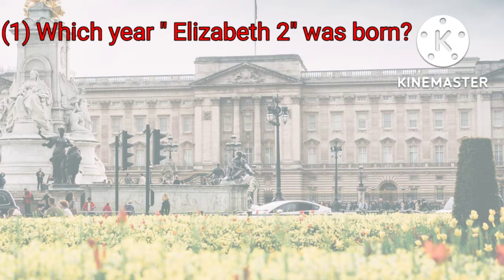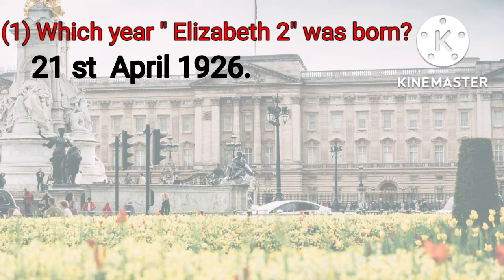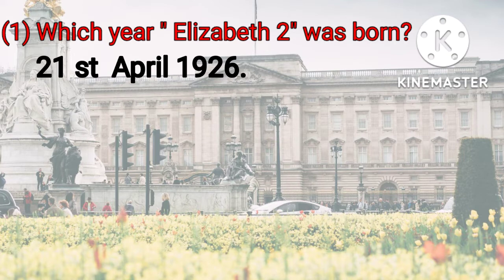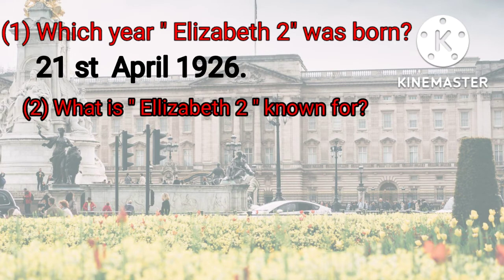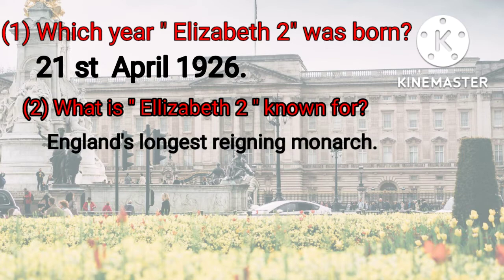Which year was Elisabeth II born? 21st April 1926. What is Elisabeth II known for? England's longest-running monarch.